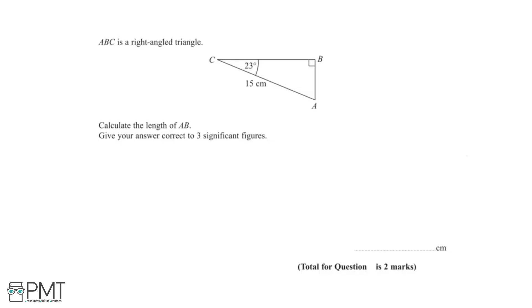In this question, we're told that triangle ABC is a right-angled triangle, and we're asked to calculate the length of AB, giving our answer correct to three significant figures.